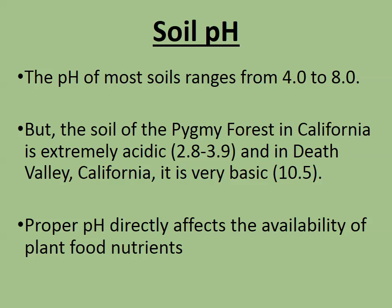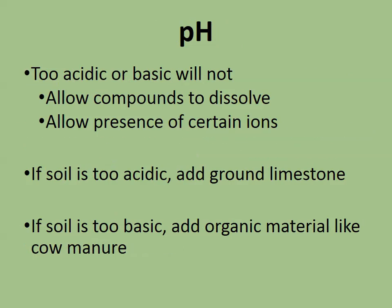Proper pH directly affects the availability of plant food nutrients. If the soil is too acidic or too basic, the compounds won't dissolve into water, and the plant will not be able to take up those nutrients. The pH also allows the presence of certain ions.